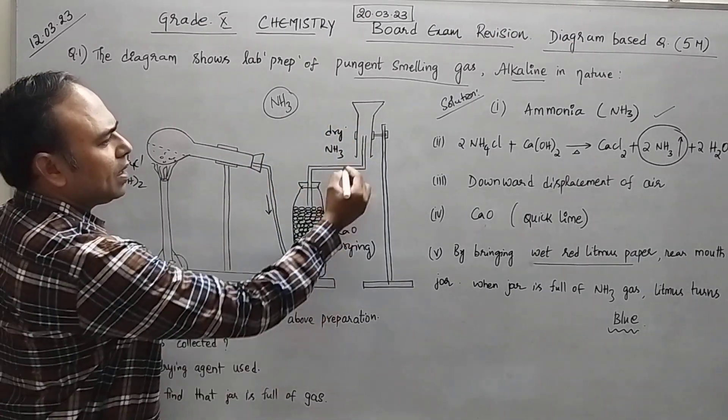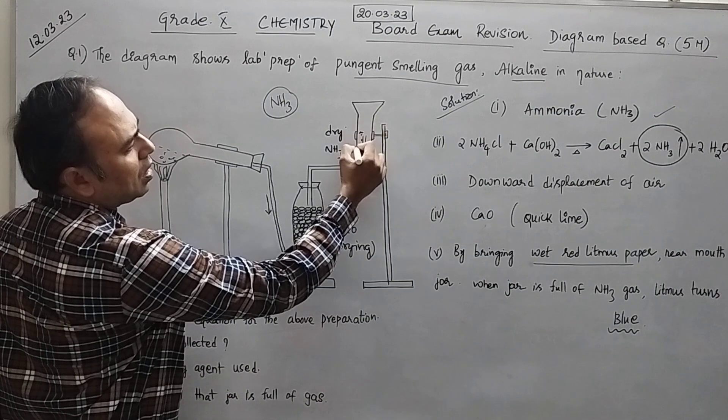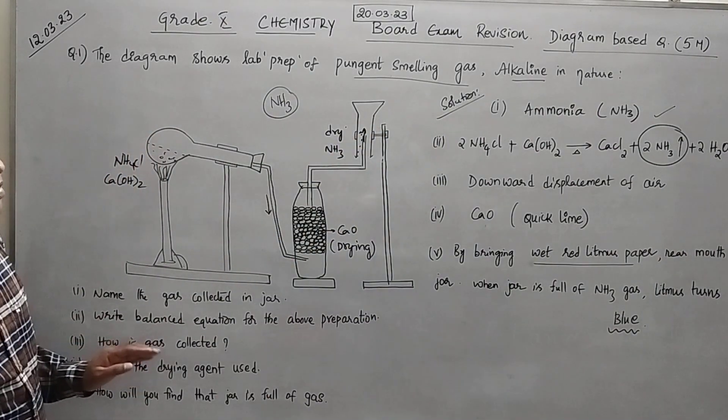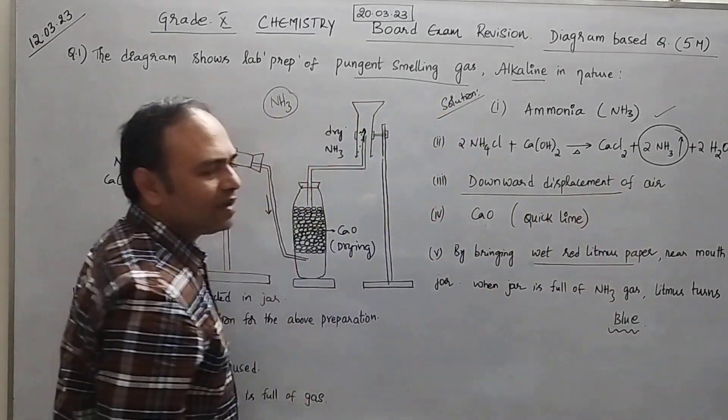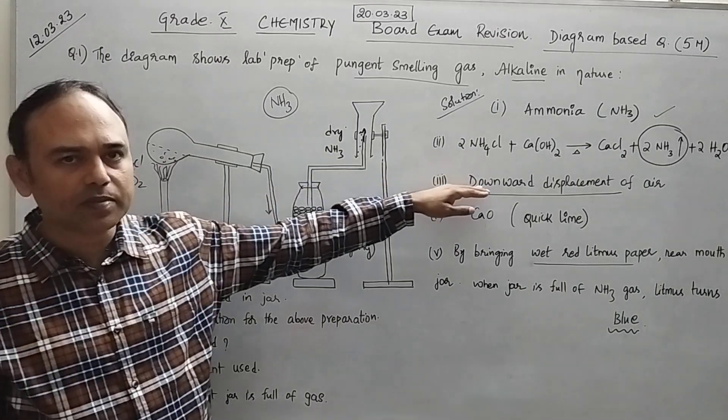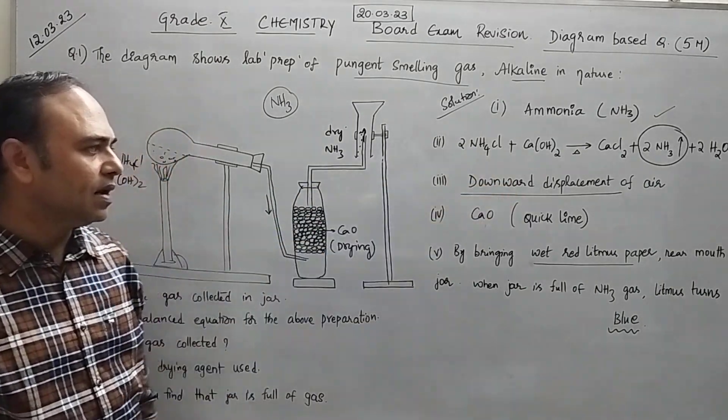Now what is happening? Ammonia gas will enter into this and then by the downward displacement of air. So very important keyword here: it will displace air down and then settle here. So downward displacement of air ammonia gas is collected.